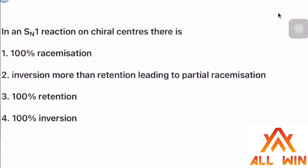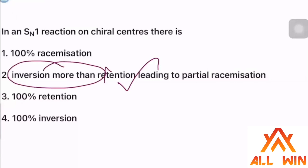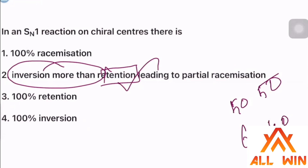In an SN1 reaction on chiral centers, there is inversion more than retention — partial racemization. This gives approximately a 60-40 ratio of inversion to retention.